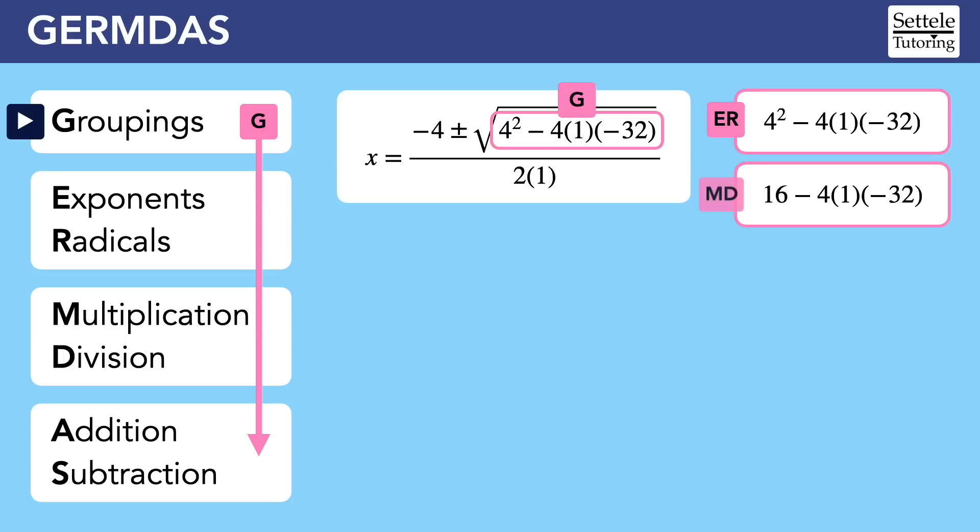Is there any multiplication or division? Yes, the right side has a bunch of multiplication. Now remember that even though we read this as 16 minus 4 times 1 times negative 32, doing multiplication first turns that minus into a negative that's attached to the 4. So negative 4 times 1 times negative 32 is 128.